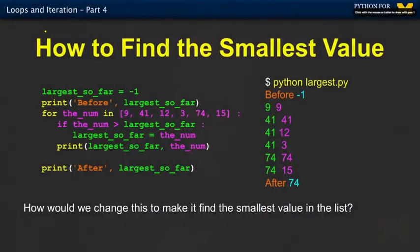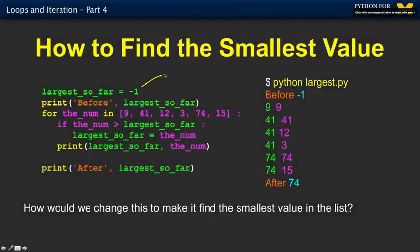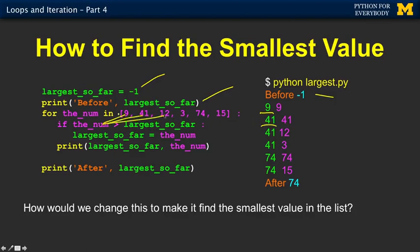So we've done a bunch of different things — we found the largest, we searched for a value, we did some sums, we did some averages. And now we're going to do the smallest value. Just before we do the smallest, let's review what we did for the largest. We have a variable called 'largest so far' that we set to negative one. Then we print it out — it starts being negative one. We loop through: nine becomes the largest so far. Then 41 — we like that better. 12 we don't keep. Three we don't keep. Seventy-four we keep. Fifteen makes no difference. Then it pops out and we get 74 — that is the largest.